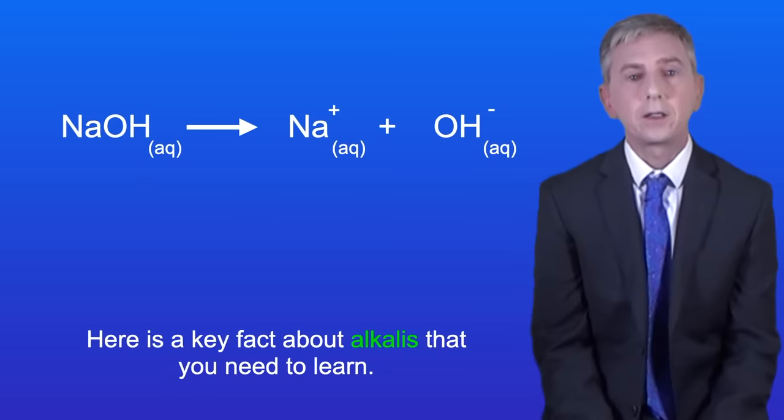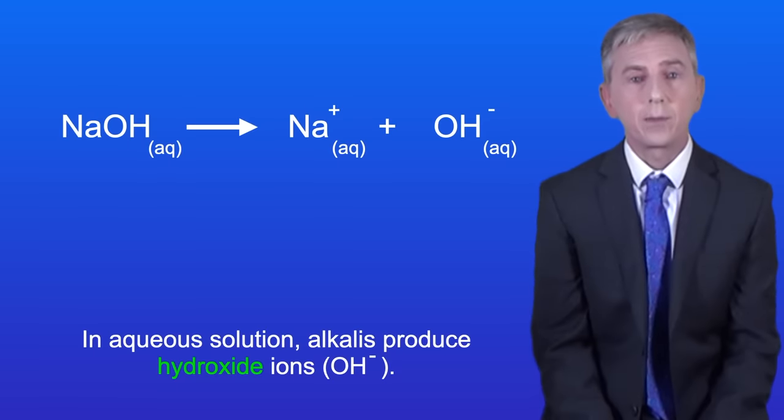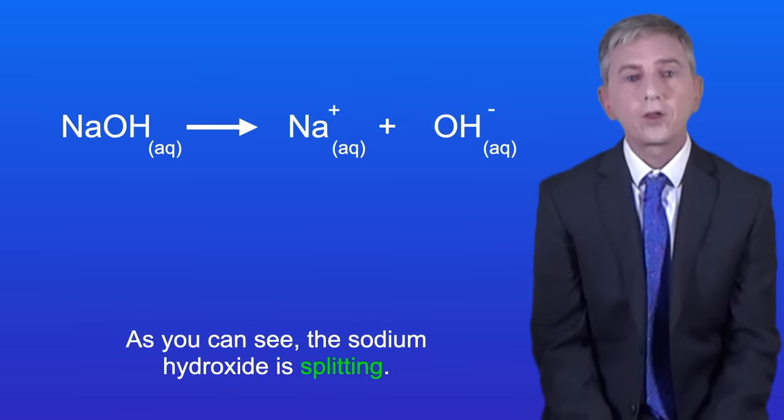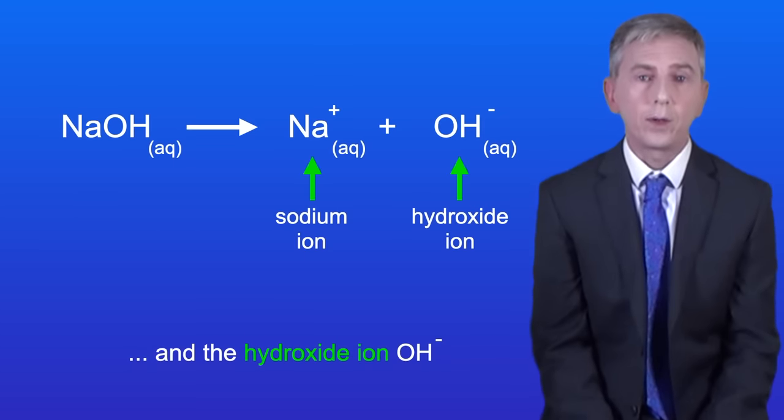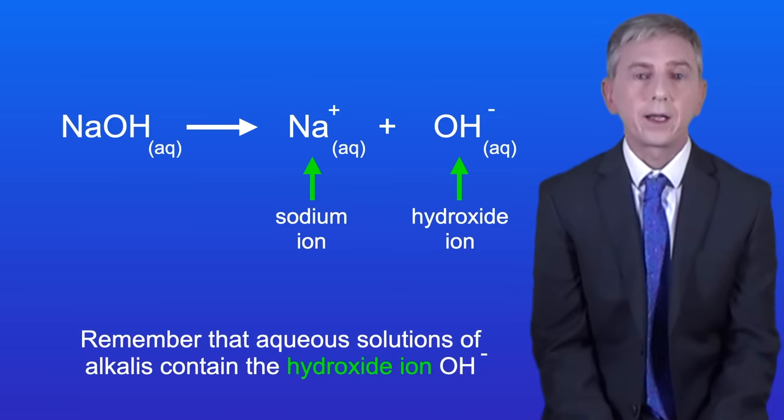Here's a key fact about alkalis that you need to learn. In aqueous solution alkalis produce hydroxide ions, in other words OH-. I'm showing you that here for sodium hydroxide. As you can see the sodium hydroxide is splitting and it's producing the sodium ion Na+ and the hydroxide ion OH-. So remember that aqueous solutions of alkalis contain the hydroxide ion OH-.